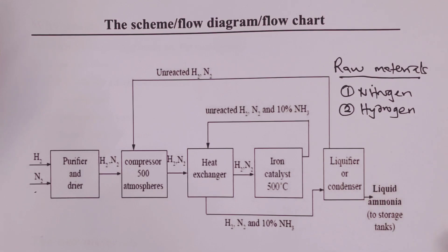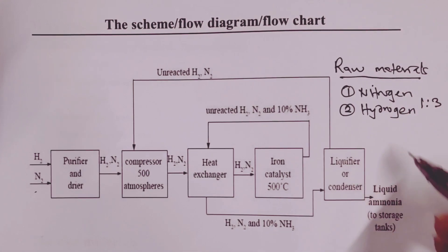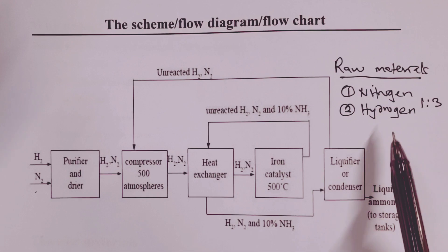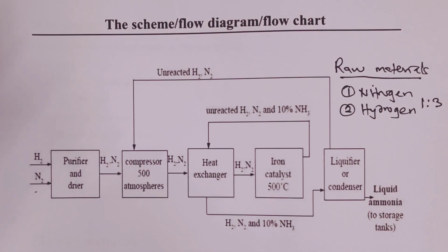Now, these two raw materials are usually needed in the ratio 1 is to 3 by volume. One volume of nitrogen for three volumes of hydrogen.